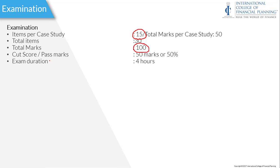To pass this exam, you need to score 50%, and the total exam duration will be 4 hours. In the other four modules, the exam duration is only 2 hours, but in this final module, you have 4 hours. So that means you need to carefully check the case study and the data given in the question before you attempt it.